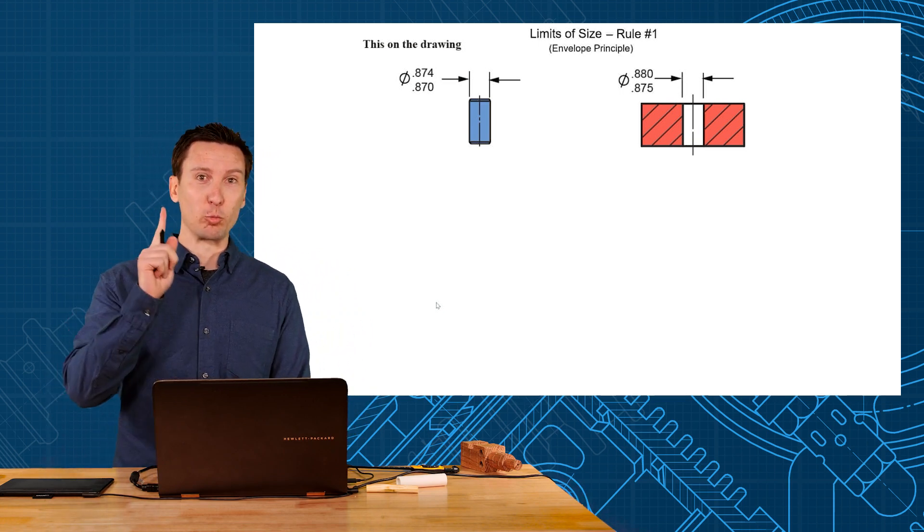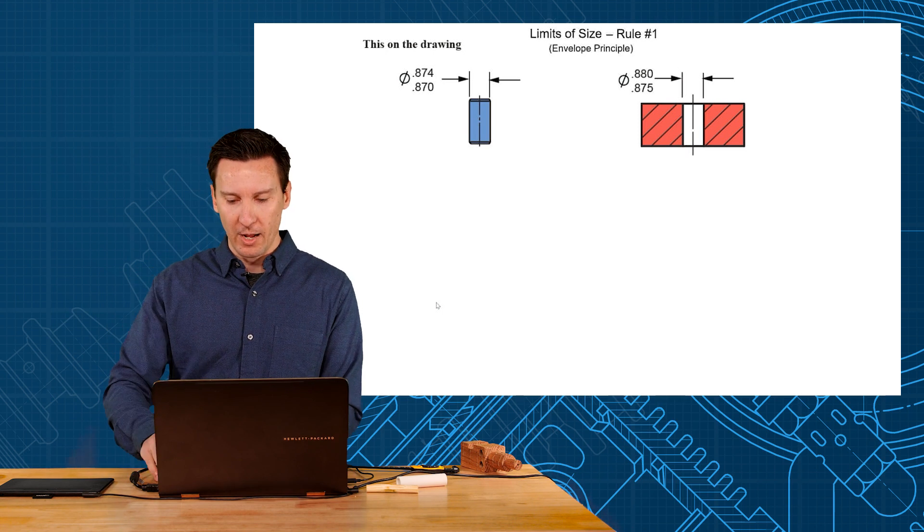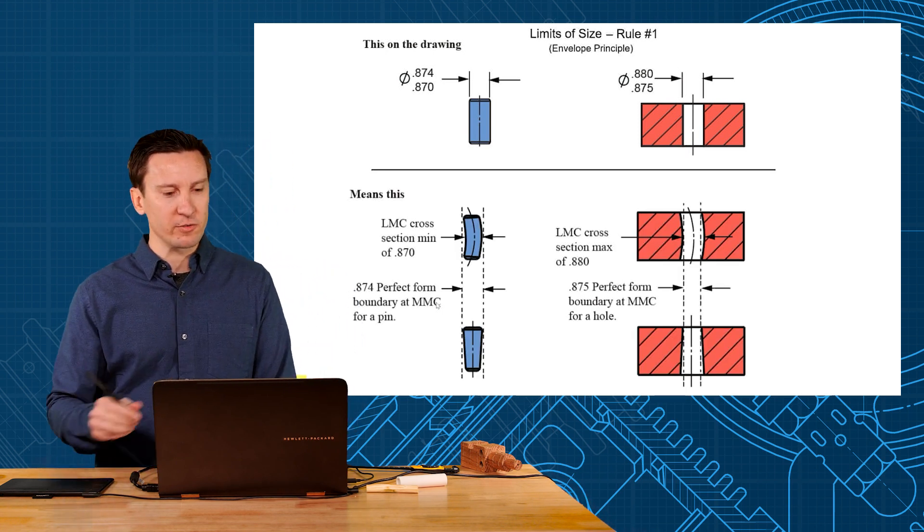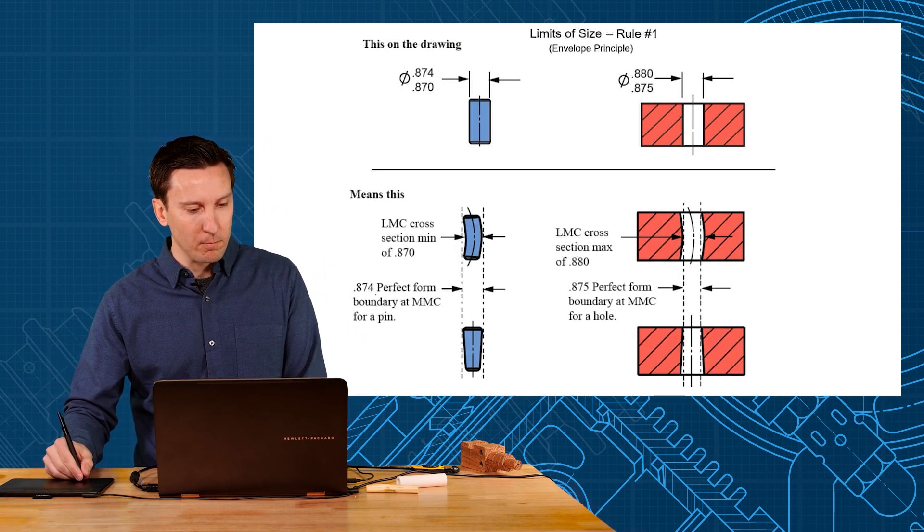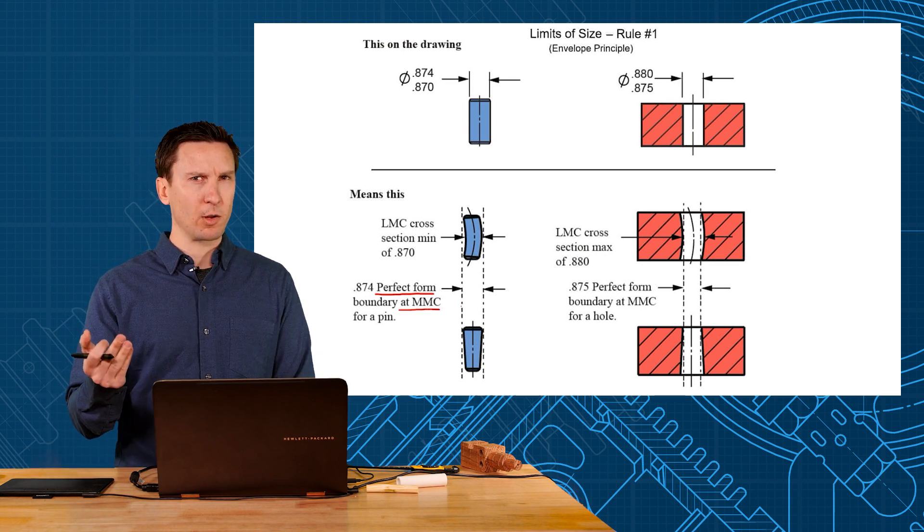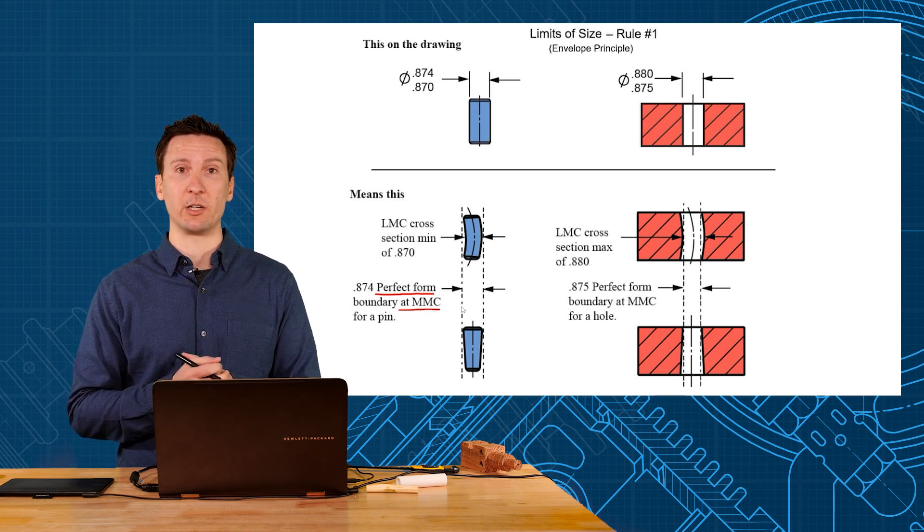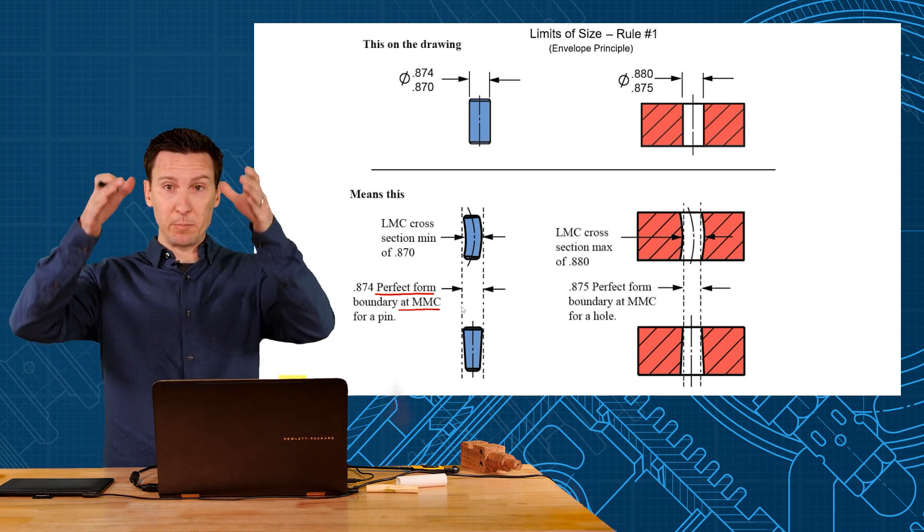This is such a fundamental rule they call it Rule Number One in the standard, also known as the envelope principle. What that states is: every feature of size must have perfect form at MMC. Remember what form meant? Form was the shape. A perfect shape at maximum material condition means when you make the biggest pin, it's got to be perfectly straight.